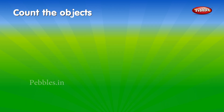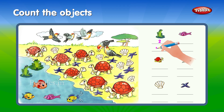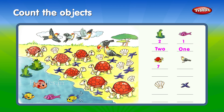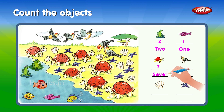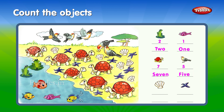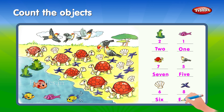Count the objects. 20: T-W-O. 21: O-N-E. 7: S-E-V-E-N. 5: F-I-V-E. 6: S-I-X. 8: E-I-G-H-T.